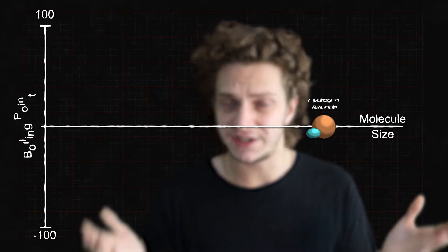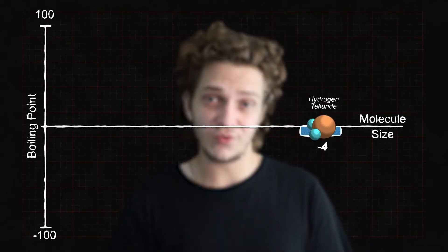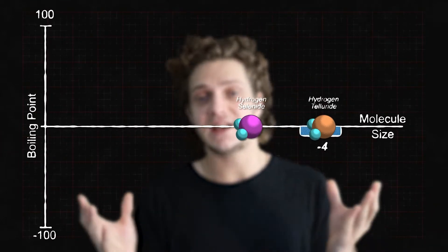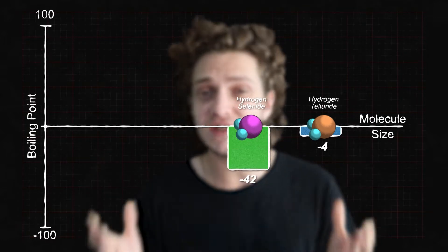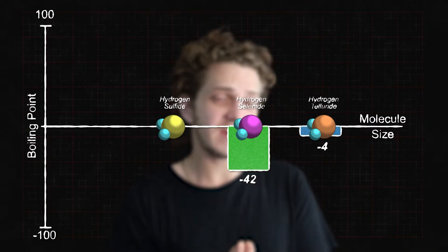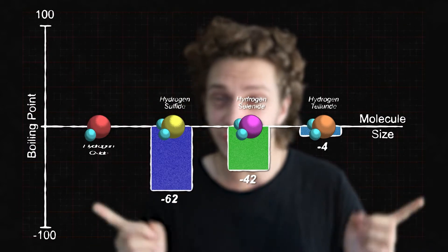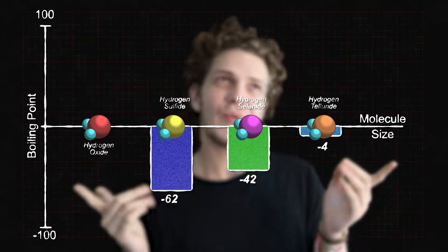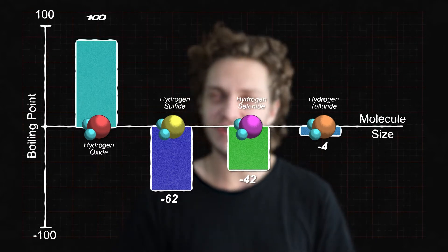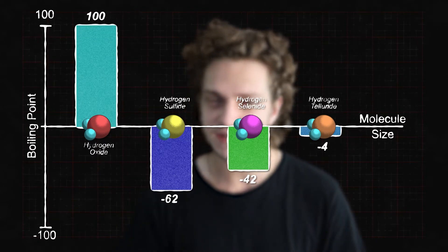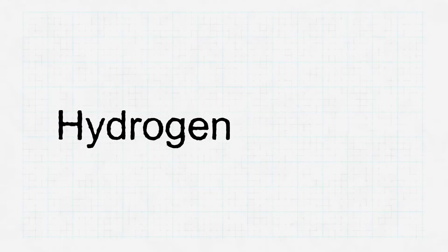Hydrogen telluride has a boiling point of minus 4 degrees. Hydrogen selenide has a boiling point of minus 42 degrees. Hydrogen sulfide, a boiling point of minus 62 degrees, and hydrogen oxide, water, has a boiling point of a hundred degrees. This is weird, and not just by hydride standards, but for a whole host of other chemical compounds. And the reason for it is all thanks to hydrogen bonding.